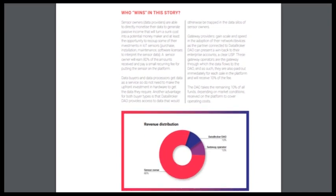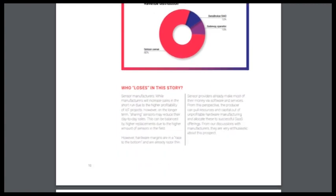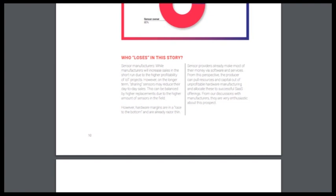Alright, so here you can see how it works. Who wins this story? I think we win. Revenue distribution is 80% for sensor owners, 10% for Data Broker DAO and 10% for gateway operators. Who loses in this history?